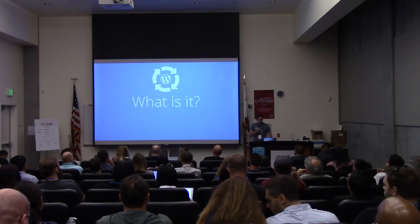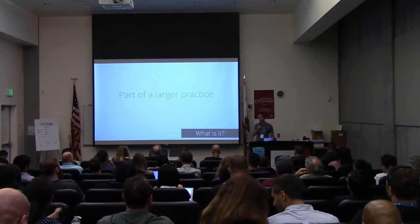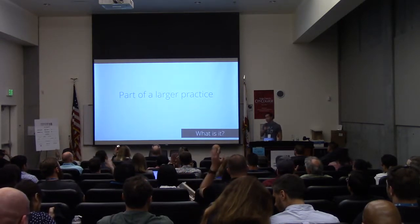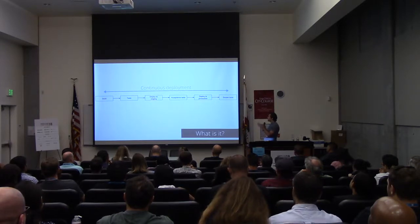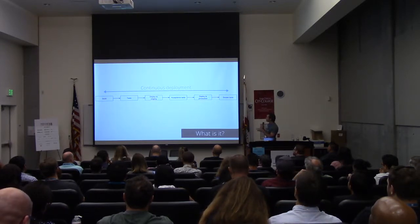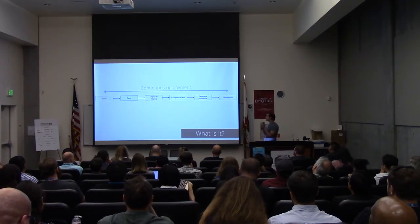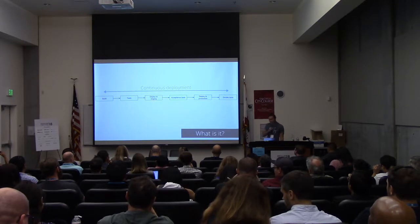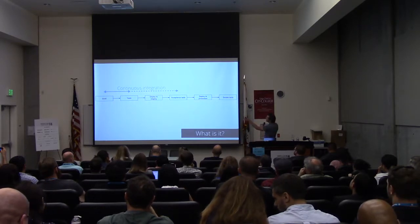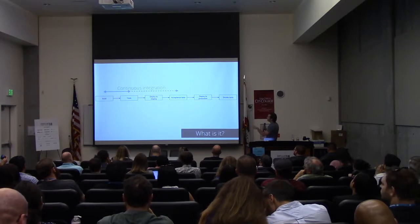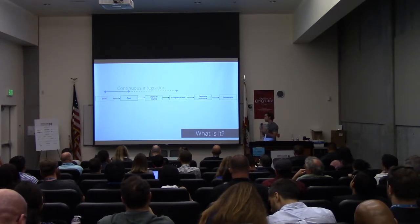So let's talk a bit more about continuous integration. What is it? It's actually part of a larger practice called continuous deployment. This is what continuous deployment looks like — in a simplified version: you build your software, you test it, you deploy it to a staging site, you create acceptance testing, then you deploy it to production, and then you do a smoke test to see that you didn't break everything and the site isn't down and your client isn't calling you. Continuous integration is really the first part of that — these two to four processes are what really define continuous integration.